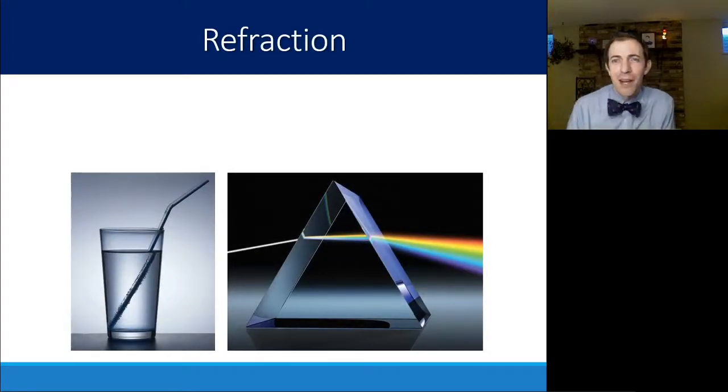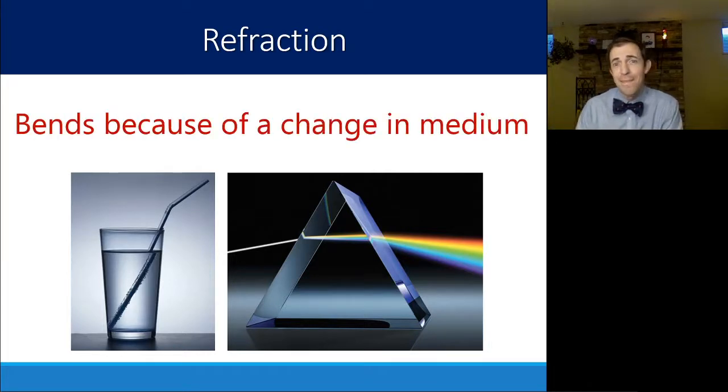So all of that is reflection. Now let's shift gears and talk about refraction. Those words sound pretty similar, but in practice, they are actually pretty different. Refraction is not the bouncing of light like reflection is. Refraction is the bending of light. Refraction is when light bends because of a change in medium. So if you've ever seen a straw inside a glass and it looks broken, it's because the light was bending as it was going through the glass and the water. And you saw the straw in a different way.